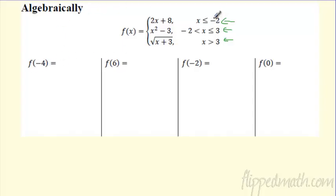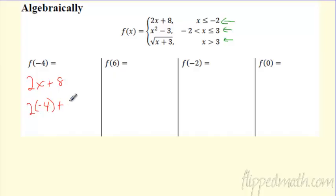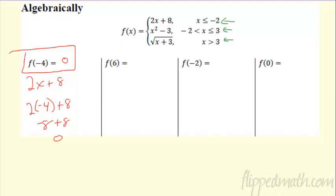F of negative four — you just got to come up here and say, where does it fall in? Negative four falls in which function: the top, the middle, or the bottom? Well, negative four is when x is less than or equal to negative two, so it falls into the top — the two x plus eight function. Plug in negative four: two times negative four is negative eight, plus eight is zero. So f of negative four is actually zero.